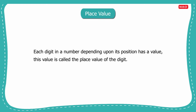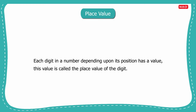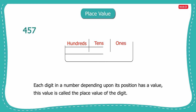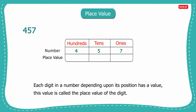Let us see what all places we have in a three digit number. Starting from right, we have ones, tens and then hundreds. Let us take a three digit number, 457, and arrange its digits in their respective places — seven at ones place, five at tens place and four at hundreds place.